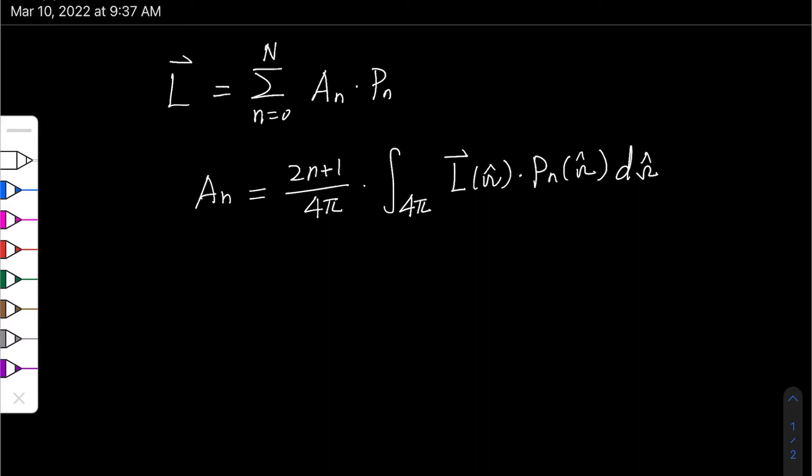So here we only need to consider the first two terms of the expansion. When N equals 0, P0 of omega hat equals 1, and then A0 should be equal to 1 over 4π times the integral of 4π of L. Since P0 equals 1, it's just the integral of L function itself.